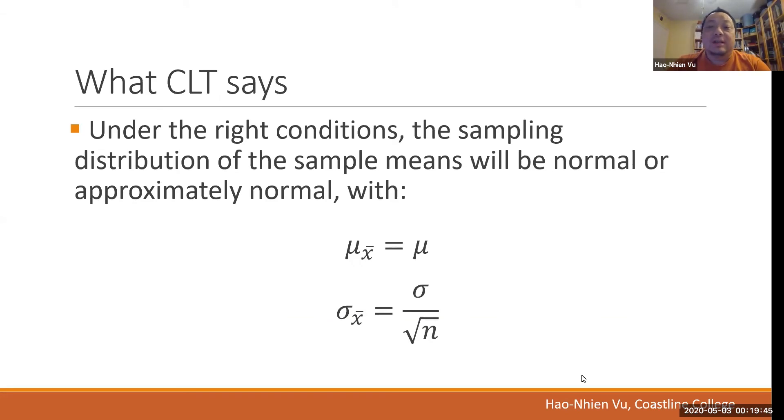The CLT is about the sampling distribution. And it says that under the right circumstances or conditions, the sampling distribution of the sample means will be either normal or approximately normal. That normal distribution will have a mean of mu x bar equals mu and sigma of x bar equals sigma over the square root of n.